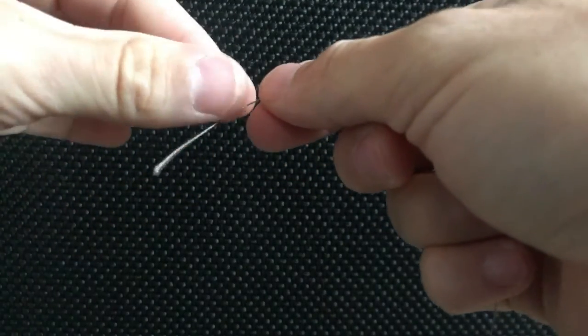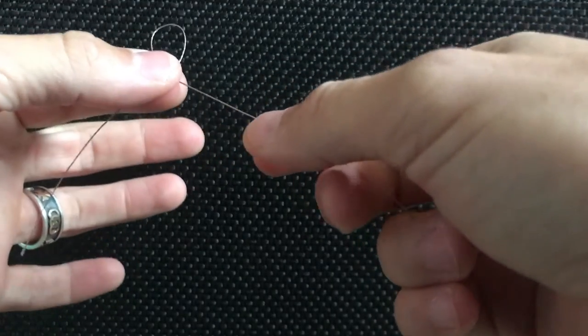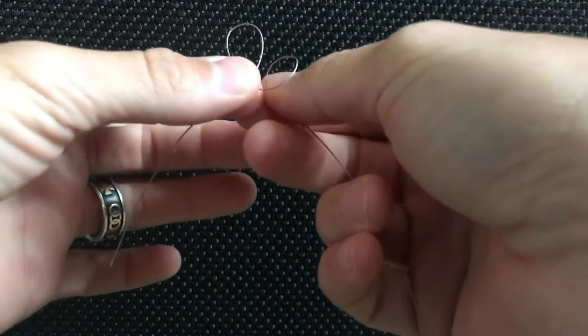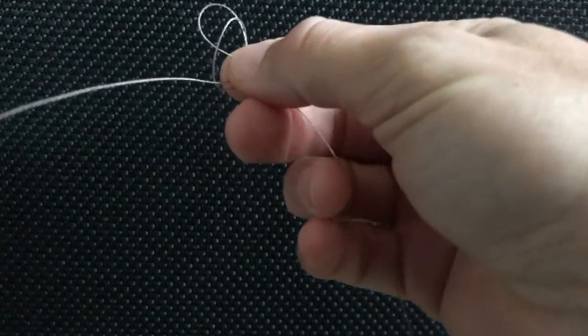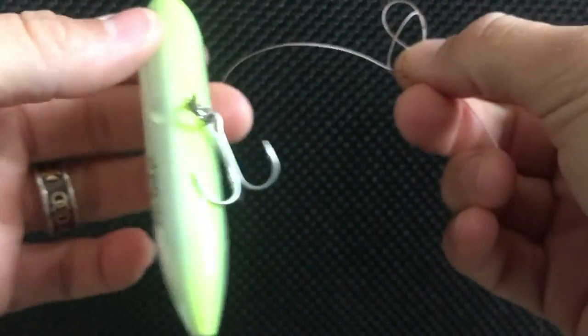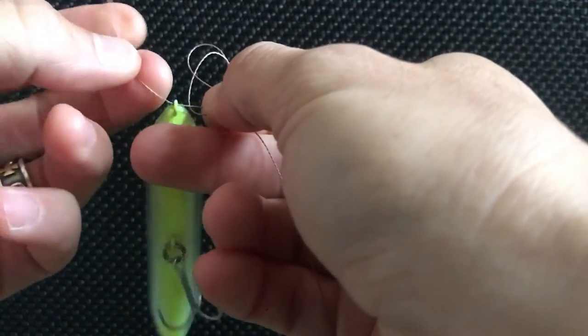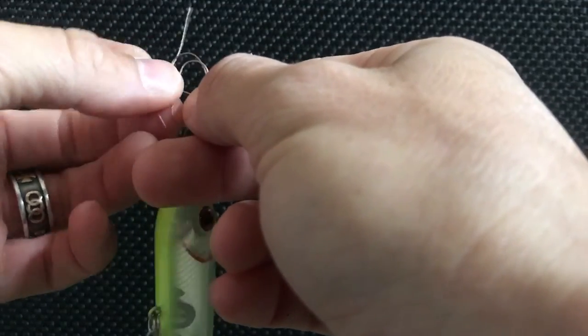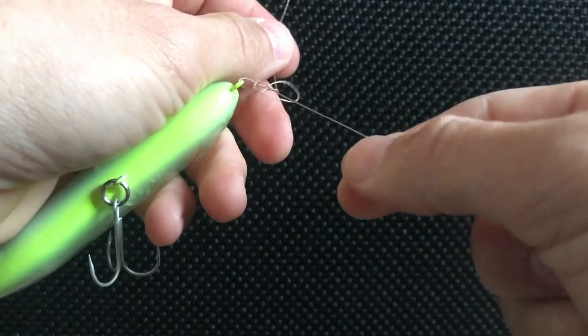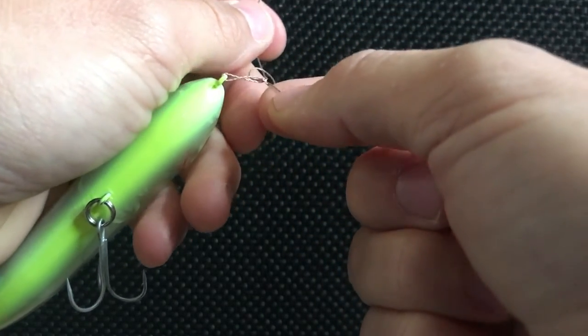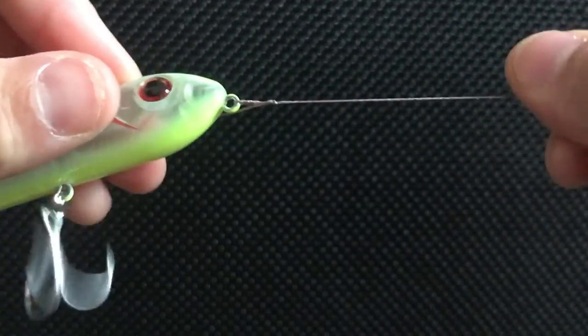All right, once again: tag end, go about three inches or two inches up, left over right, another loop left over right. Take that second loop and go through the first loop, pinch it. Take your bait with your tag end through it, bring that tag end through that loop. Run everything up to however big you want your loop to be, then you just pull that running end and you have your loop knot.